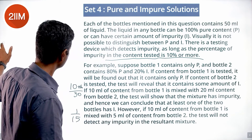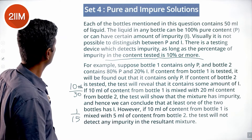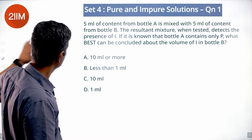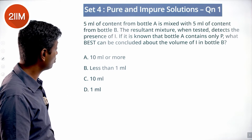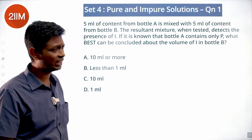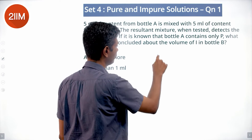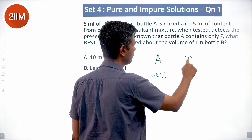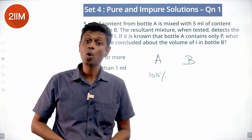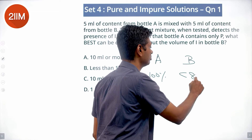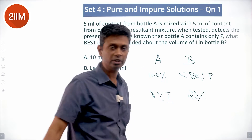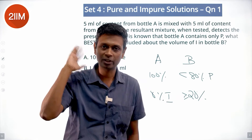5ml of content from bottle A is mixed with 5ml of content from bottle B. The resultant mixture when tested detects the presence of impurity. It is known that bottle A contains only P — 100% P, 0% I. Since we are mixing equal quantities, for impurity to be detected the impurity level in the mixture must be 10% or more. Bottle A contributes 0% I, so bottle B must contribute enough to push the average to at least 10%.